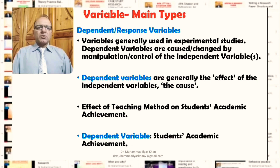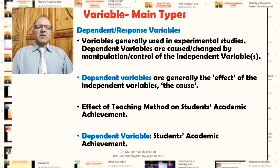To take the same example — effect of teaching method on students' academic achievement — the dependent variable here is students' academic achievement, which is the outcome or effect attributed to changes in the independent variable, that is the teaching method.